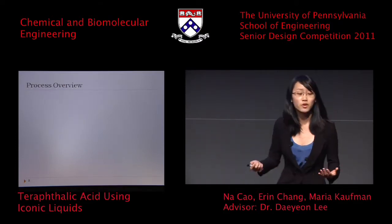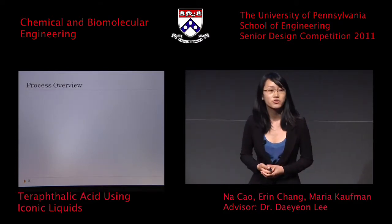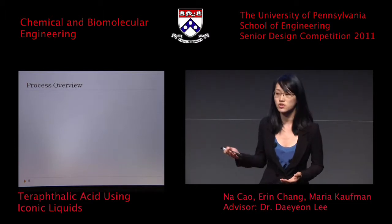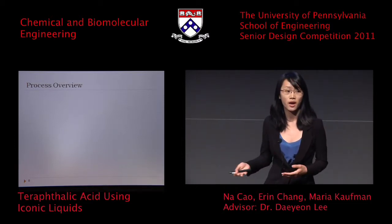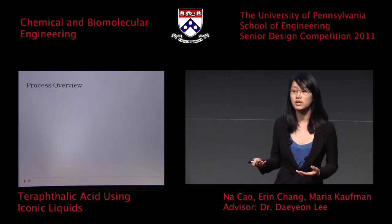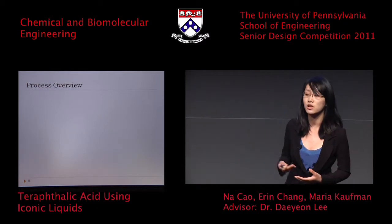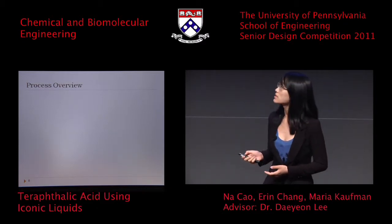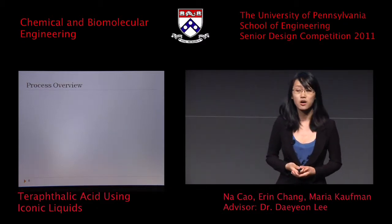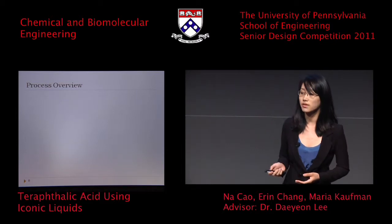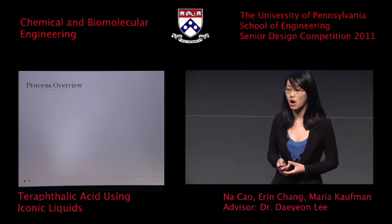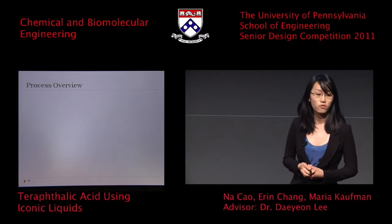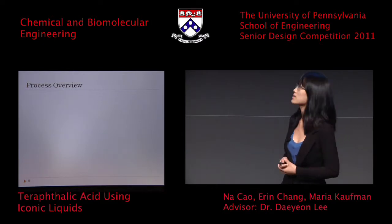As chemical engineers, we often have to scale up laboratory results — such as the one patented by SABIC — to industrial sizes in order to produce in large quantities. The first thing we did was use a software called Aspen to develop an industrial model for our entire process.